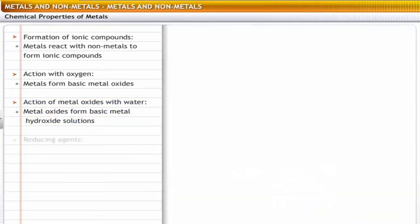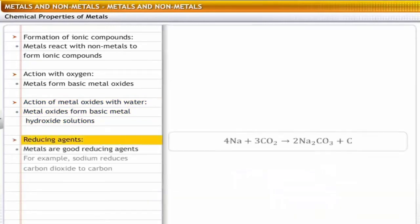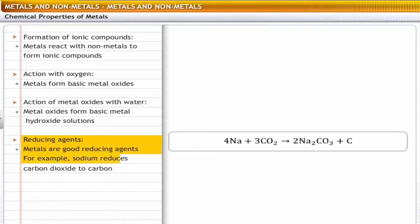Action as reducing agents: metals have a tendency to lose electrons — in other words, they are good reducing agents. For example, carbon in the combined form accepts electrons from sodium and gets reduced to carbon in the free state. Thus, sodium acts as a reducing agent.